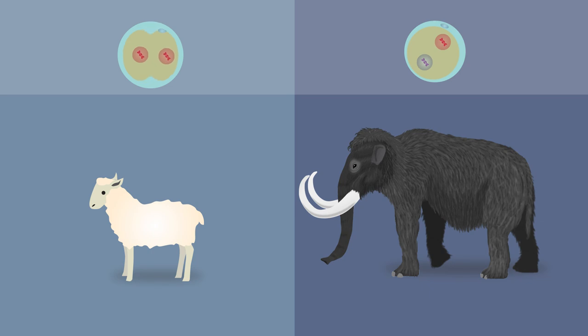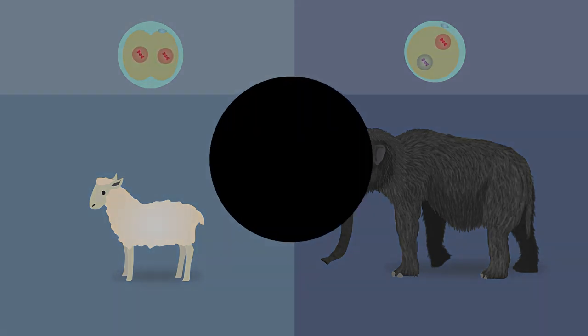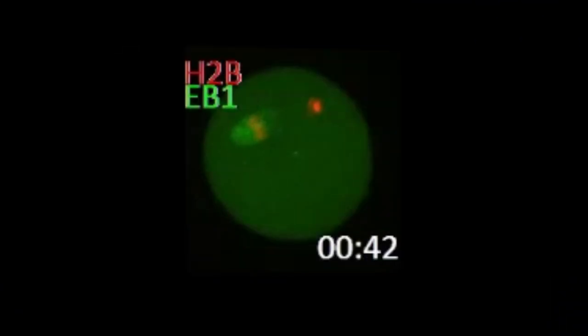But unlike for Dolly, the development of those nuclei stopped short of cell division. After the transfer, researchers observed filling of the transplanted nuclei with mouse proteins, namely histone and tubulin, and the formation of a new nucleus-like structure.